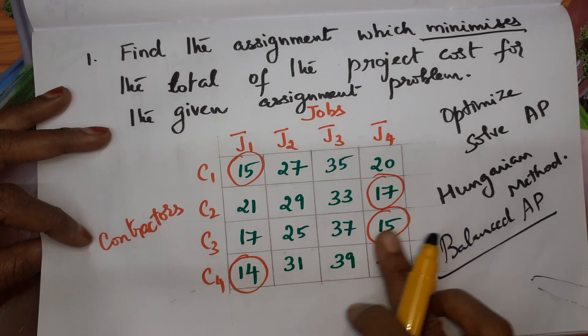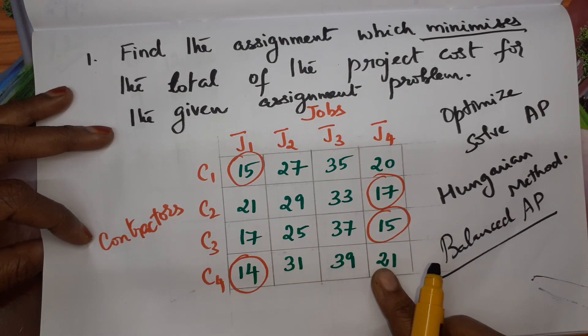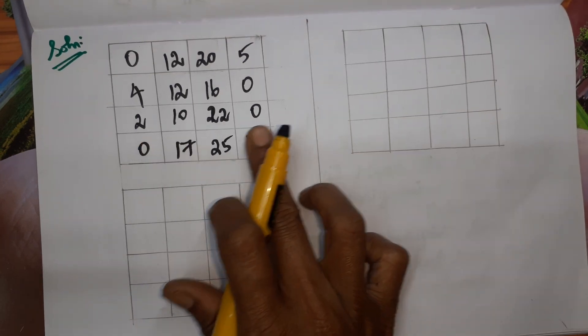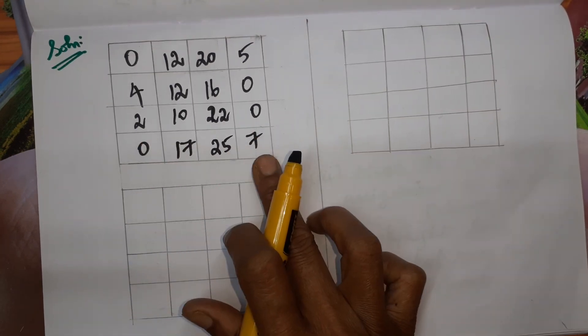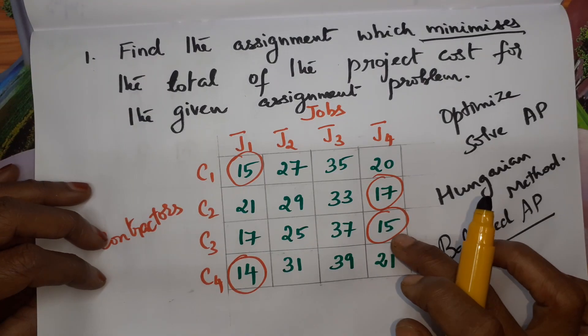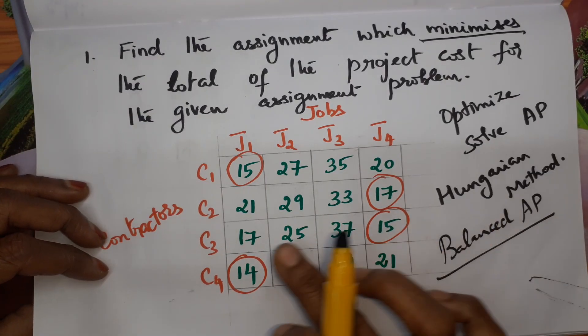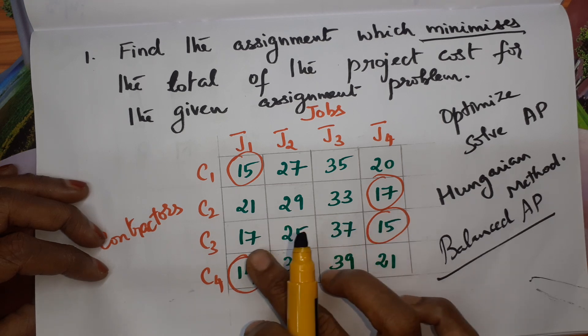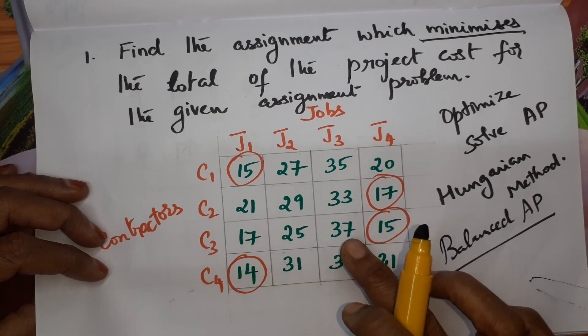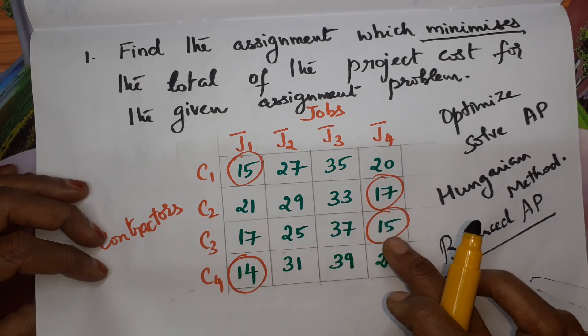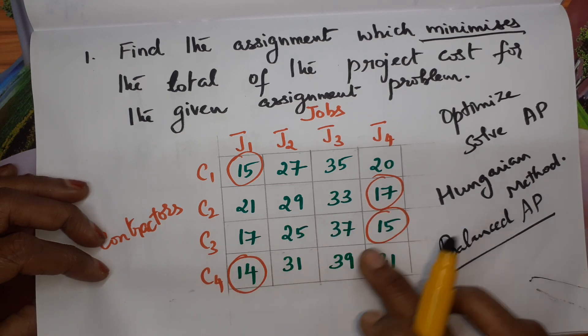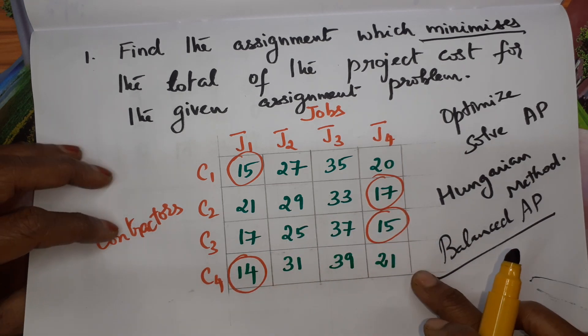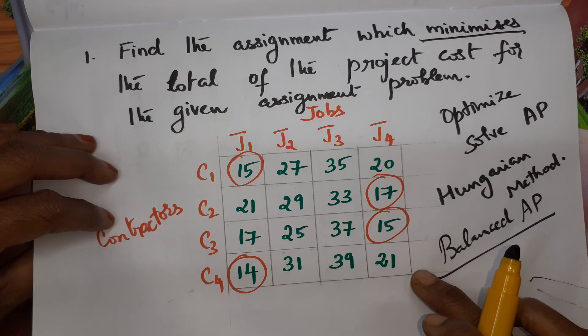Likewise, we have to do the same for the remaining two rows. I have subtracted and entered the values. In the third row with minimum 15: 17 minus 15, 25 minus 15, 37 minus 15, 15 minus 15. You have to do the same for the fourth row too.